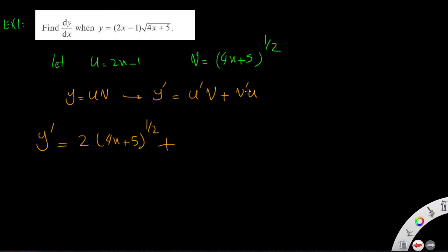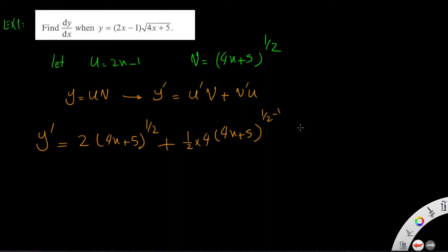Plus the differentiation of the second function v prime using the chain rule, as studied at A-level: the power comes down, times the differentiation of the bracket which is 4, then (4x plus 5) to the power of one half minus 1.